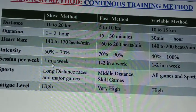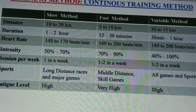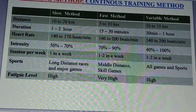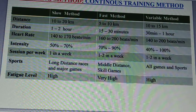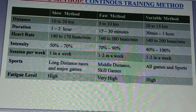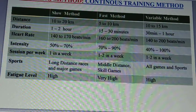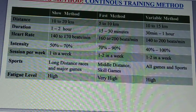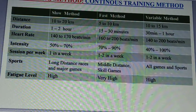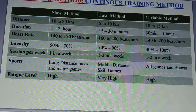Regarding distances: in the slow method, 10 to 20 kilometers; in the fast method, 5 to 10 kilometers; in the variable method, 10 to 15 kilometers. For duration: slow training method is 1 to 2 hours; fast training method is 15 to 30 minutes; variable method is 30 minutes to 1 hour. They have different intensity, sessions per week, sports, and fatigue levels — almost high in all activities.